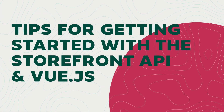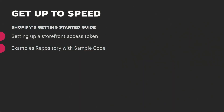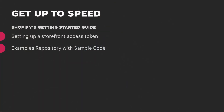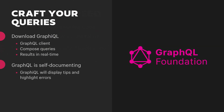Here are some tips for getting started. A great starting point is Shopify's Getting Started Guide — it gives you everything you need to generate a storefront access token to access the endpoint, and links to a repository of examples to springboard into your own project. Next, get comfortable with GraphQL using a client called GraphiQL. It allows you to compose queries and see results in real time. One very interesting aspect of GraphQL is that it's self-documenting, giving you helpful hints as you craft queries before moving them into your code base.